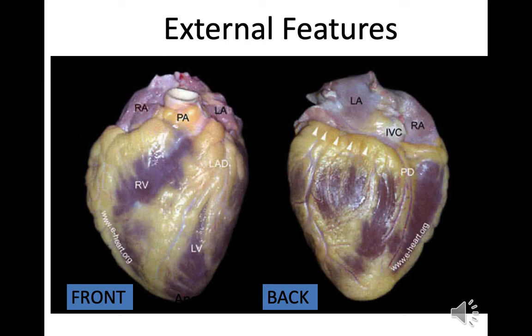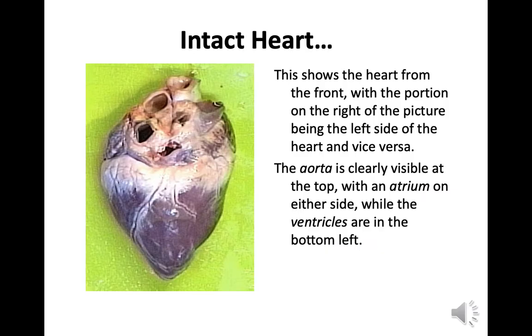This slide shows the external features — the front and the back. You can pause it to have a look and consider whether there are any differences between front and back. The heart is shown intact, not yet cut apart, from the front — the right of the picture is the left side of the heart. The aorta is clearly visible at the top, with an atrium on either side, while the ventricles are in the bottom left.